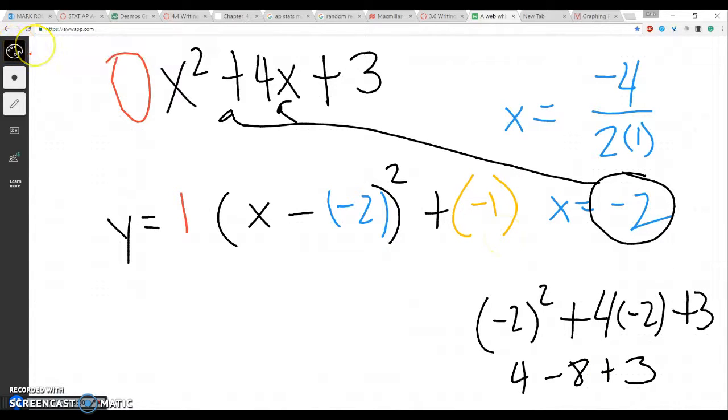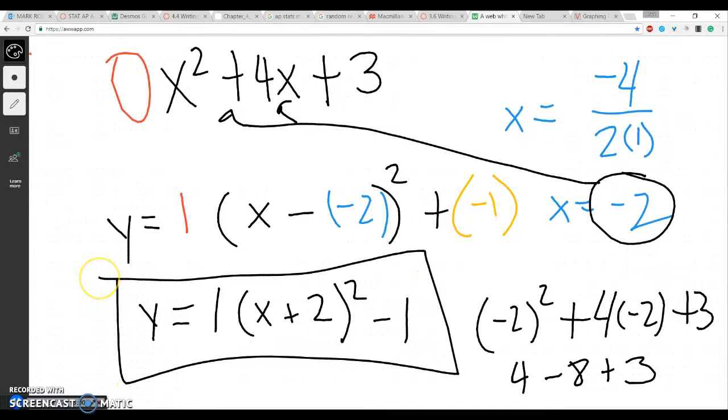So again, if I wanted to write this a little bit nicer, I'd have y equals 1(x plus 2) squared minus 1. So that's how I write things in vertex form. Make sure when you're writing things in vertex form, you know the basic structure: this is your a term, this is your x-intercept term, and this is your y-intercept term. And it makes it a lot easier.